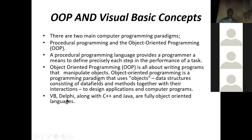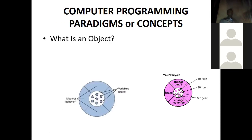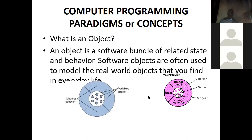There are programming languages that are object-oriented — some of them are Visual Basic, Delphi, C++, and Python. So you take an object and you can access its properties. What is an object? An object is a software bundle of related data and behavior. Software objects are often used to model the real world.